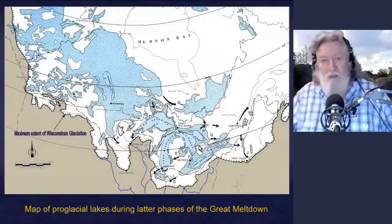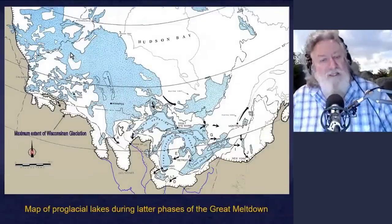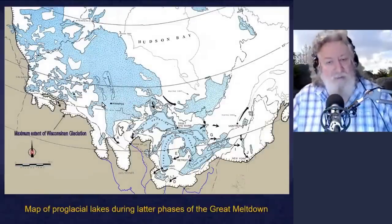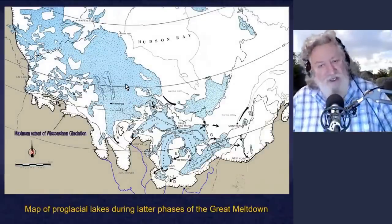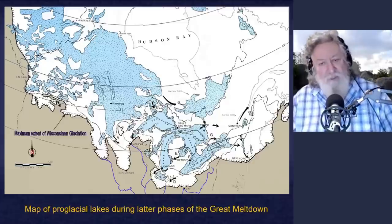Let's go back through some of the slides we looked at last week and then move on to new ones, to give folks the idea of the distribution of some of these great meltwater ponds that formed. There we go. You can see Hudson Bay up there. This is showing the maximum extent of the meltwater.